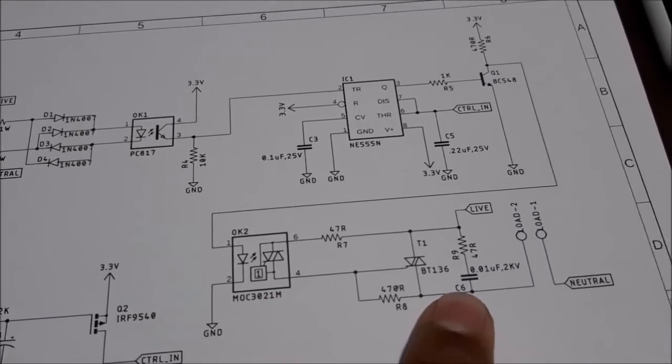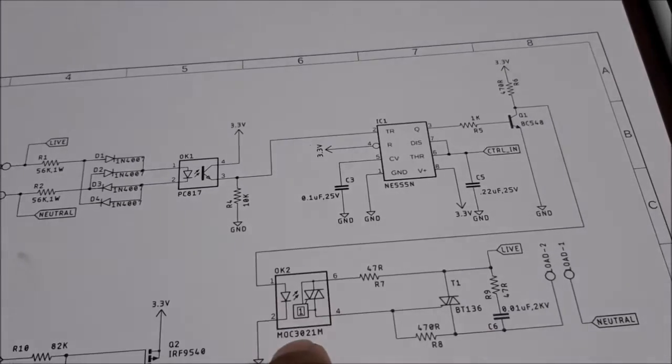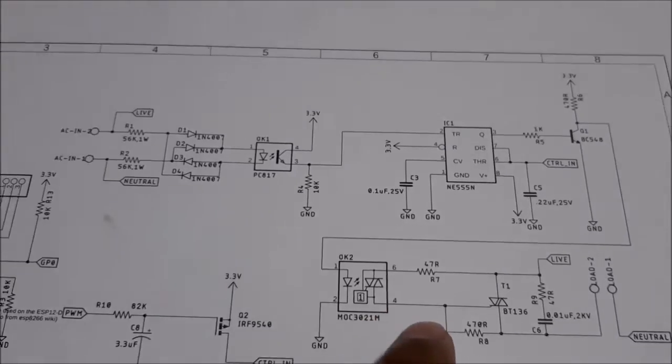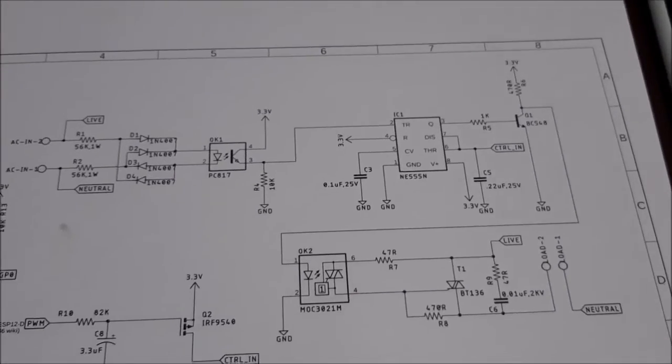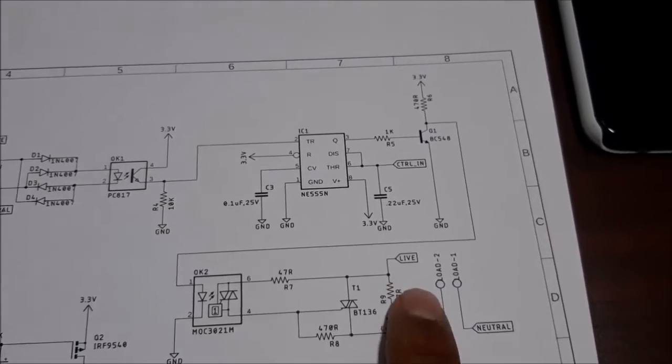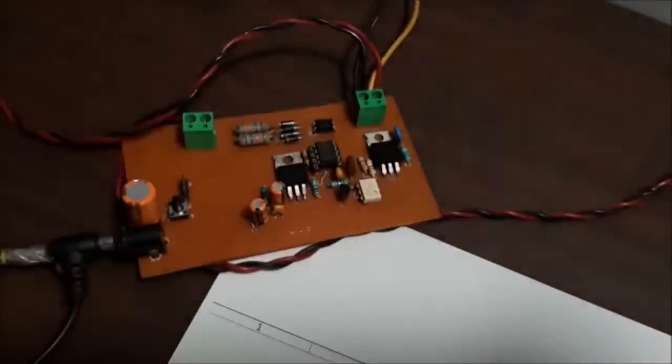This optocoupler drives the triac and this section is optically isolated so you don't get electrocuted while you are working on the low voltage side. There is a snubber circuit and this is where the load is connected.